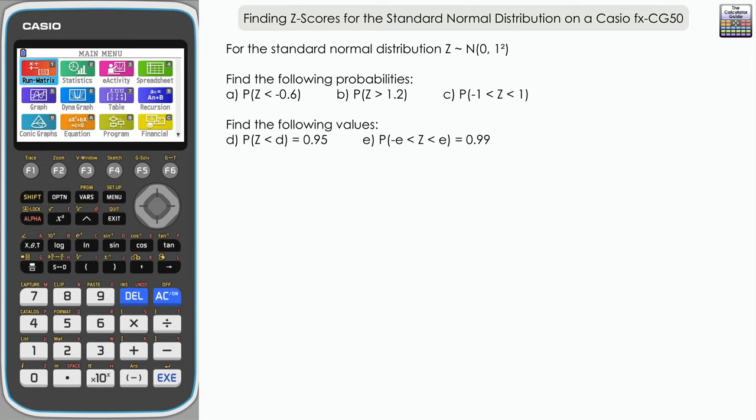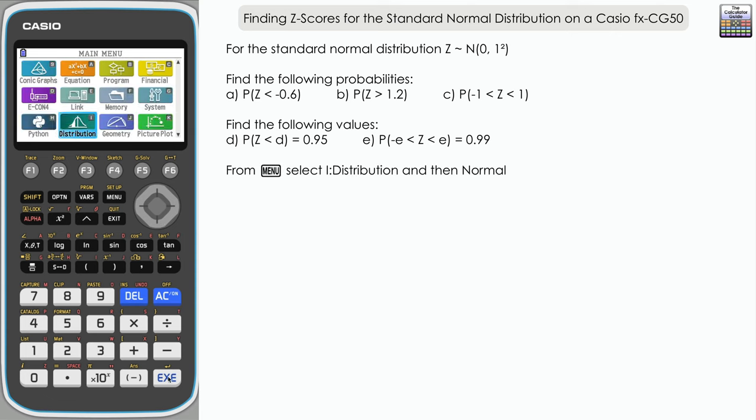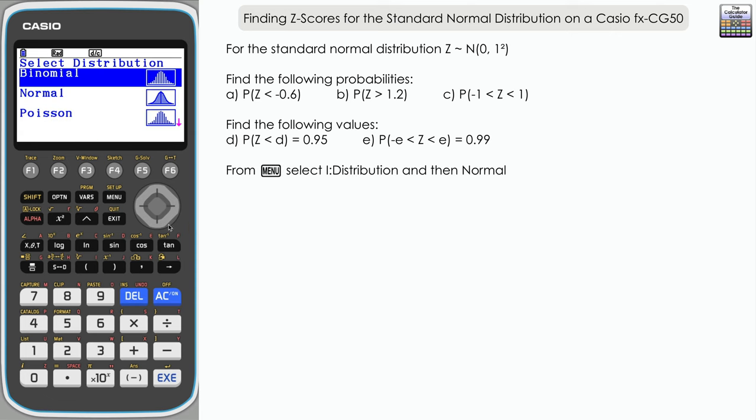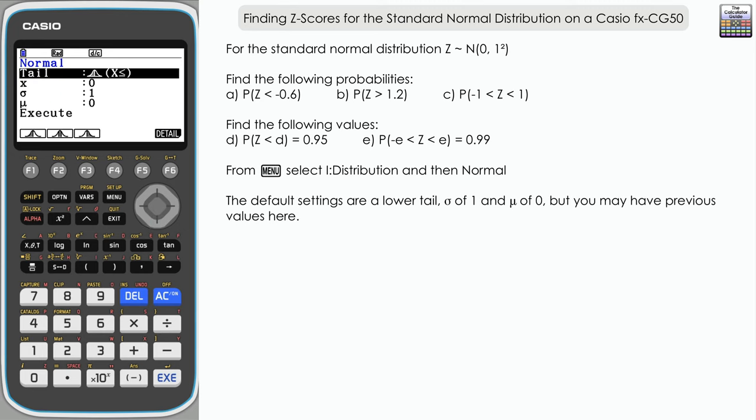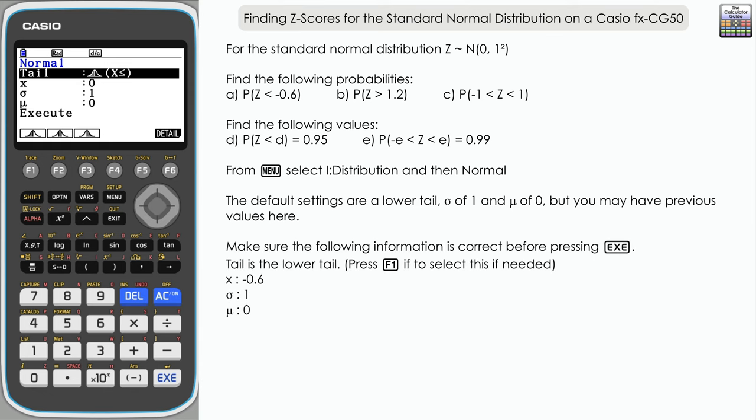Now we're going to do this in distribution mode on the FXCG50. So from the menu, it's down to distribution, and then from there select normal. Now I reset the calculator prior to this video, so I actually have the default settings displayed currently, which are suitable for us for finding Z-scores. If you don't have this, don't worry—you can change these. You've perhaps got previous values from calculations that you've done.